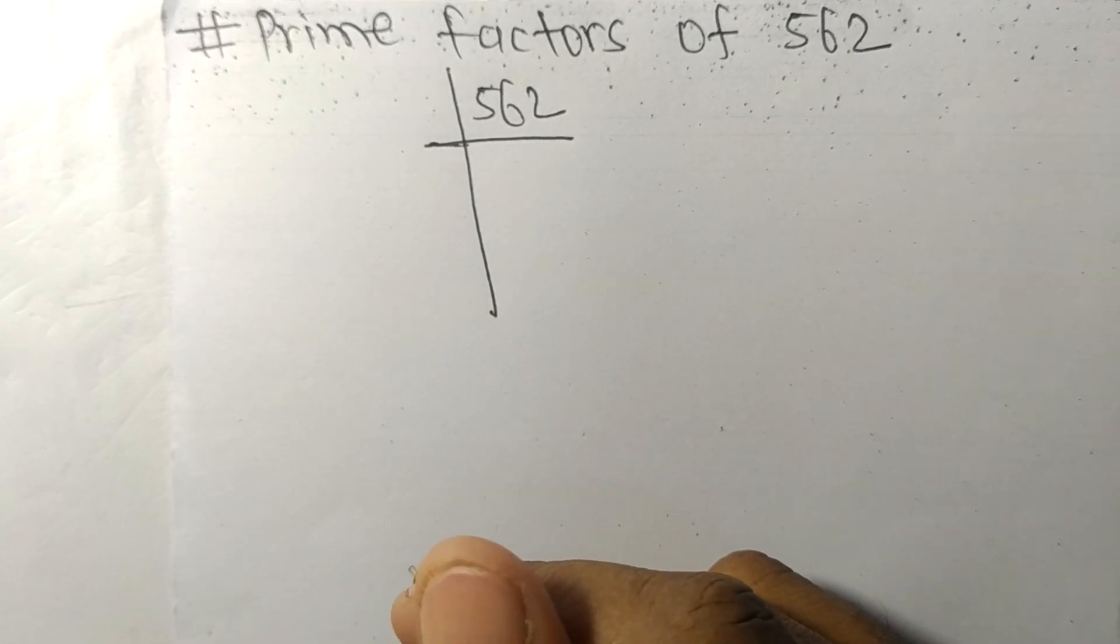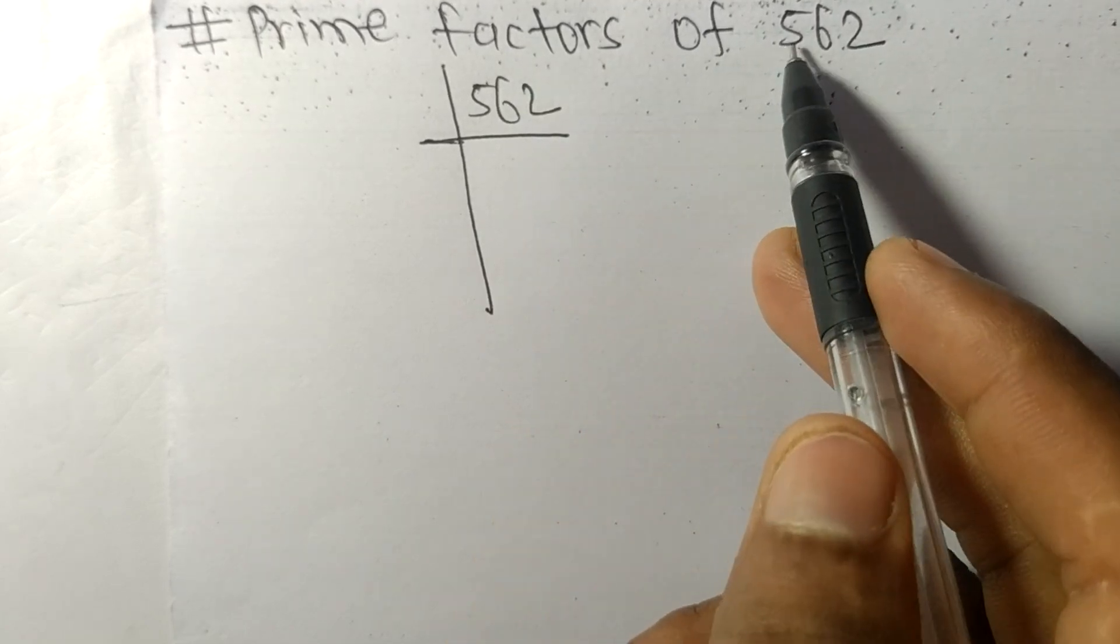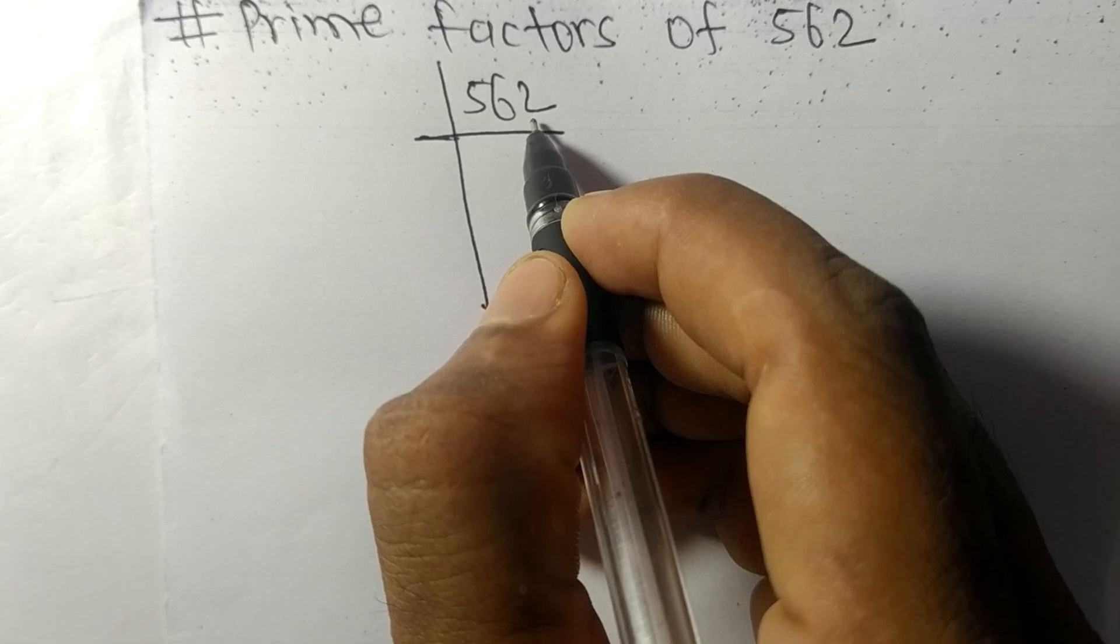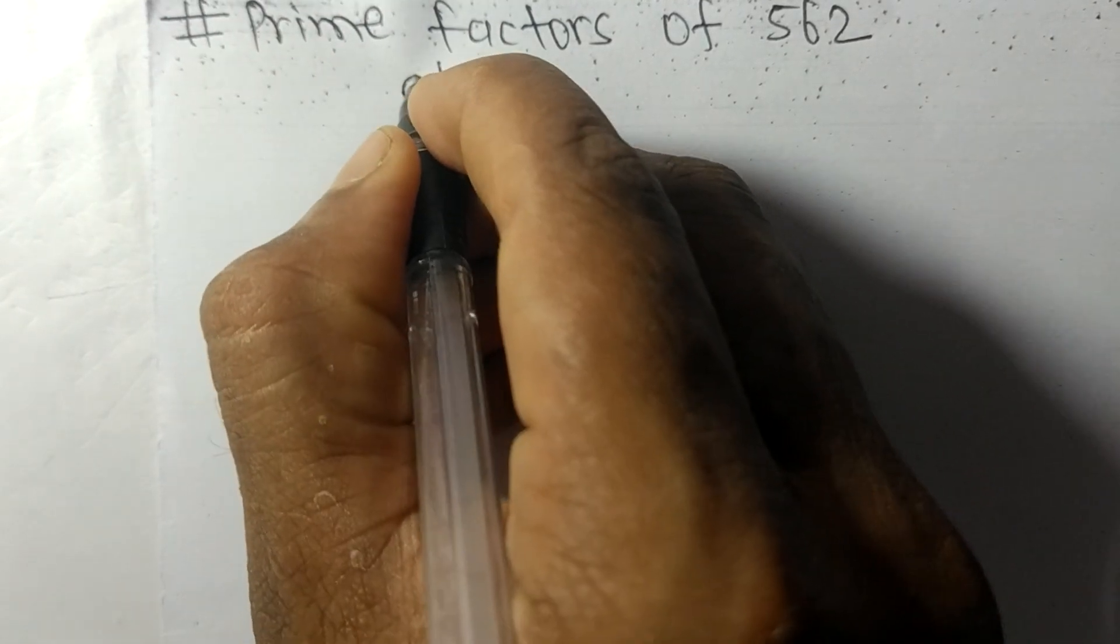So today in this video we shall learn to find the prime factors of 562. At last it contains an even number 2, so this whole number is divisible by 2.